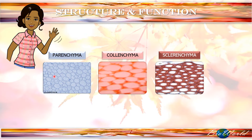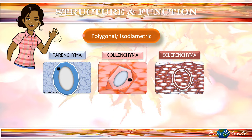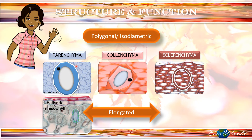When we look at the individual cells that make up the parenchyma, collenchyma and sclerenchyma tissue, we find that they are similar in structure. The shape that they have is known as a polygonal or isodiametric structure, meaning the cells have many sides. However, there are some specialized parenchyma and sclerenchyma cells that are elongated. You find elongated parenchyma cells in the leaf in the form of the palisade mesophyll. Isodiametric sclerenchyma cells are called sclereids, while the elongated ones are called sclerenchyma fibers.